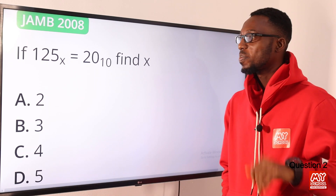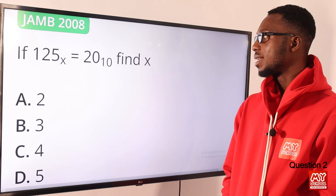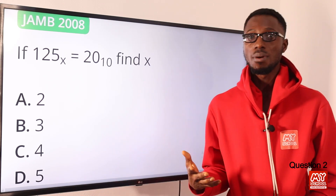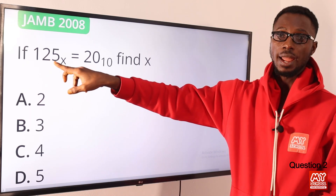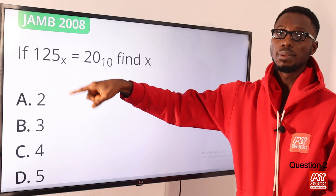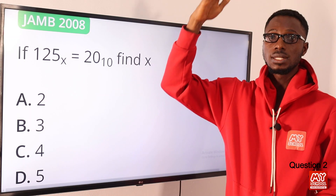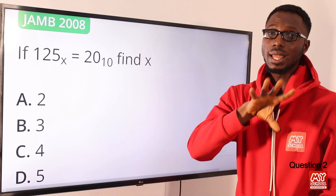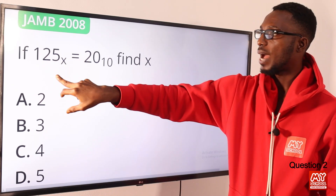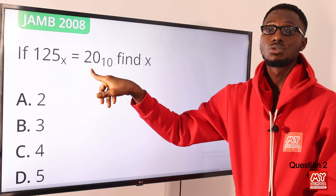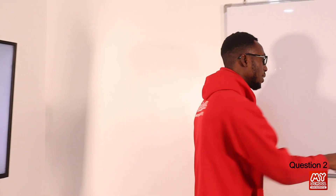Question 2: if 125 base X equals 20 base 10, find X. Generally when it comes to number bases, the highest digit here is 5, so the base must be higher than 5 — starting from 6, 7, 8, 9, 10. But the target question is to find in what base will 125, when expressed in base 10, equal 20.